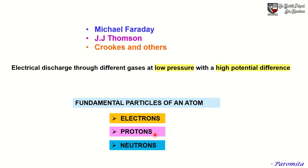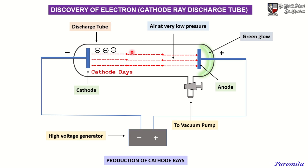We will now discuss the discovery of the electron and the cathode ray discharge tube. This splitting of atoms into subatomic particles was convincingly demonstrated by experiments involving the conduction of electricity through gases at low pressure. William Crookes studied the conduction of electricity through gases at low pressure and under the influence of high potential gradient or high potential difference.